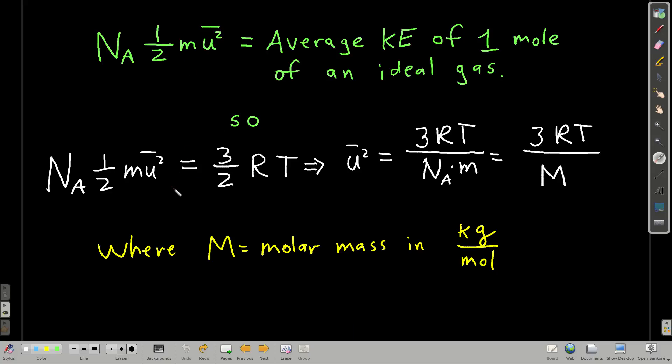So anyway, if we set these two expressions equal to each other, the one we just saw, 3 halves RT and this one, we rearrange them a little bit, solve for the mean square speed. We get mean square speed is equal to 3 RT over Avogadro's number times the mass of one molecule, which is really just the molar mass. Here, M is the molar mass, and now watch out, because we're used to molar masses being in grams per mole, right? But here, they have to be in kilograms per mole. R is 8.314 joules per kelvin mole, and T is the temperature in kelvin.